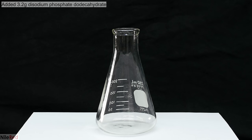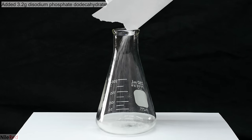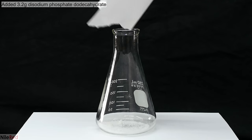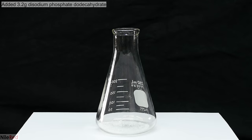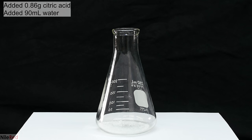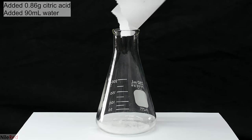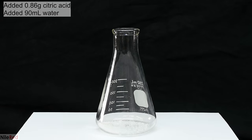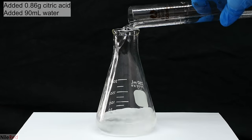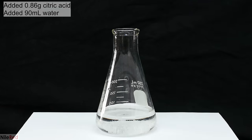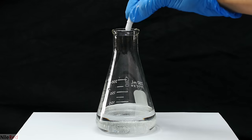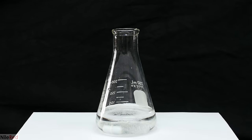The first thing that I need to do is prepare a buffer solution and I start by adding 3.2 grams of disodium phosphate dodecahydrate to a flask. I then add in about 0.6 grams of citric acid and 90 milliliters of distilled water. I drop in a stir bar and I mix things until everything has fully dissolved.